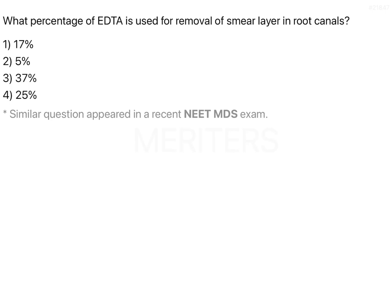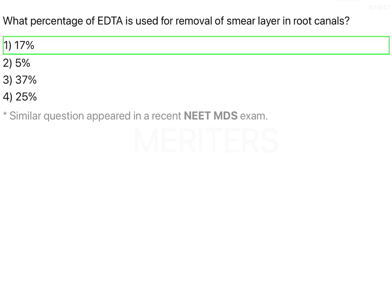A lot of studies were conducted as to the percentage of EDTA that should be used. Out of all the studies, it was found that 17% EDTA should have maximum efficacy in removing whatever smear layer as well as the dentinal layer, so that you can bring about effective lubrication as well as removal of dentinal shavings, thereby helping in greater success of root canal therapy. That is the answer to the question.